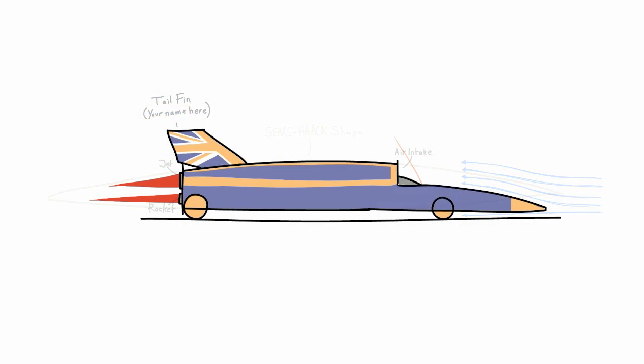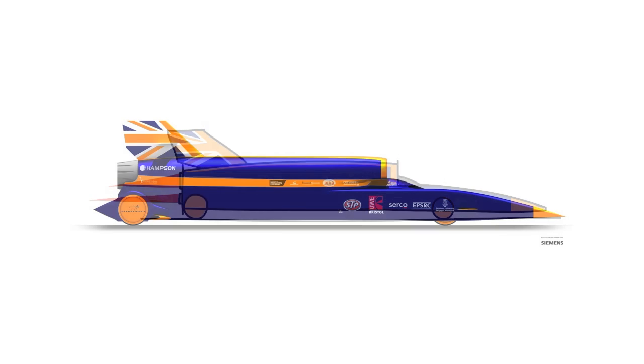So now we have the shape of Bloodhound. But it is nothing like the mathematical shape that we started with, purely because of practical considerations.